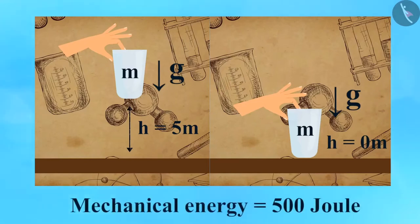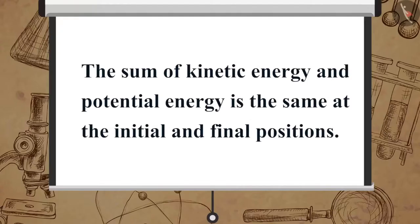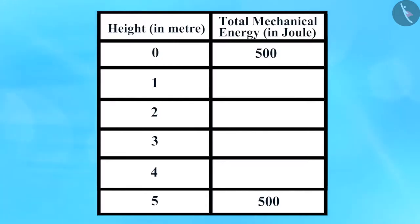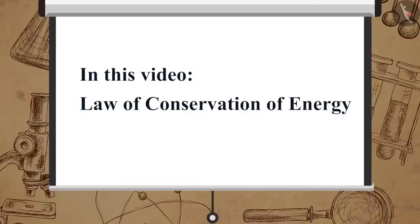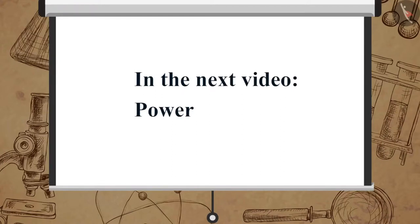On comparing the total energy of the object at both heights, we notice that the total energy remains the same. It shows that the sum of kinetic energy and potential energy is the same at the initial and final positions. Can you calculate the sum at other heights and fill up this table, to see if total mechanical energy remains constant throughout? In this video we learned about the law of conservation of energy. In the next video we will learn about power.